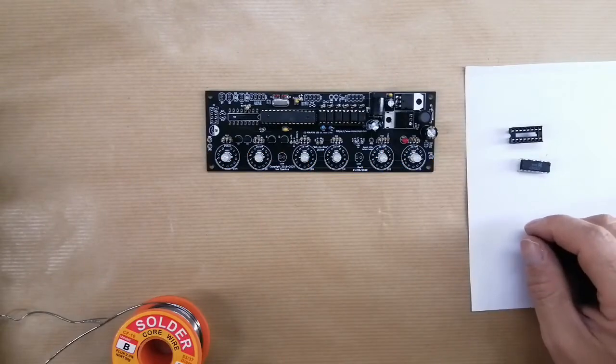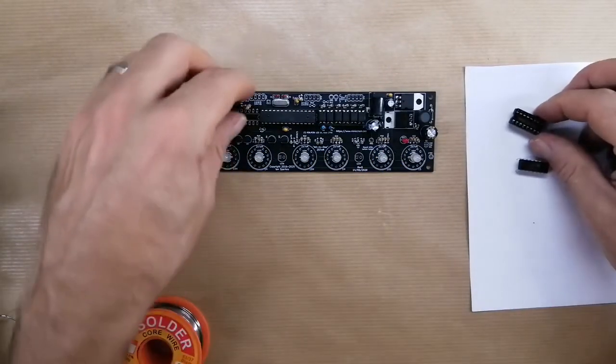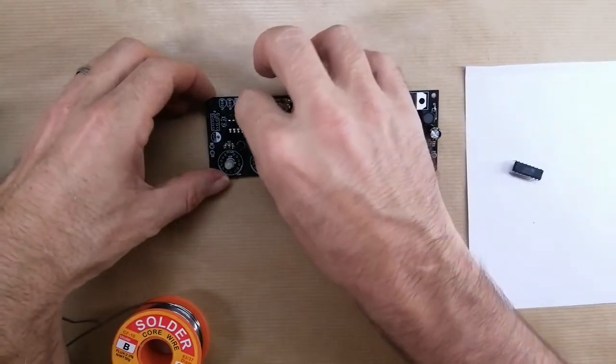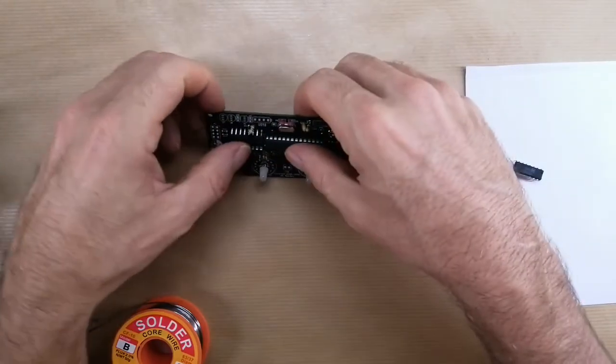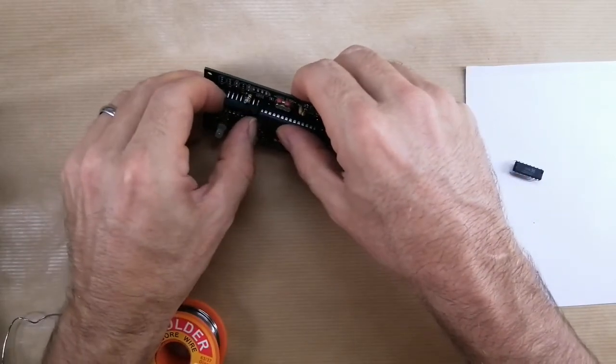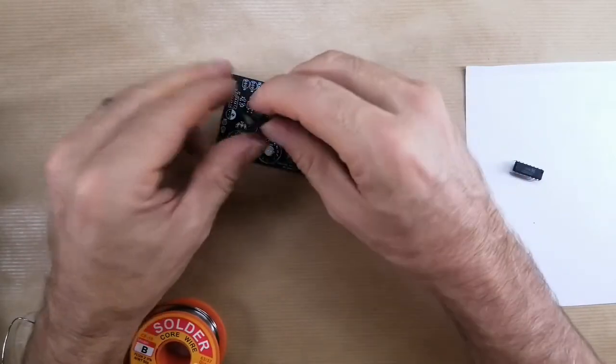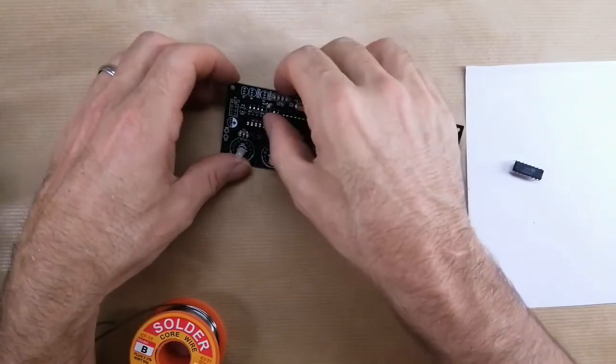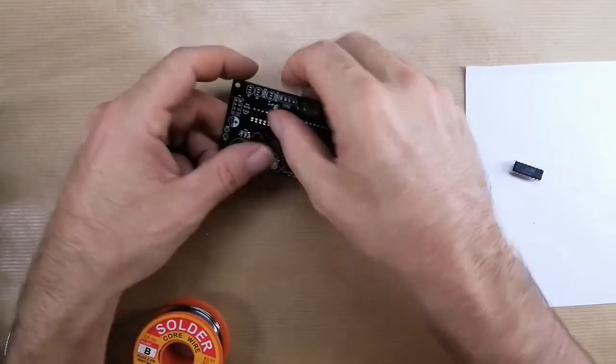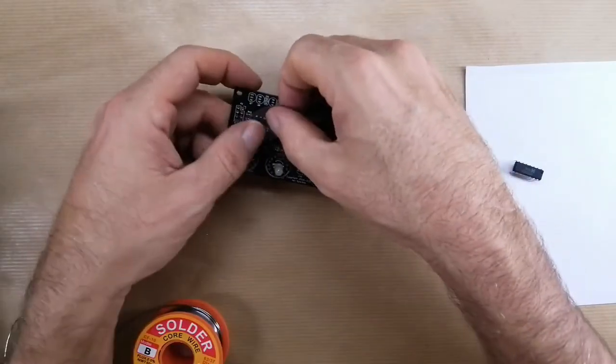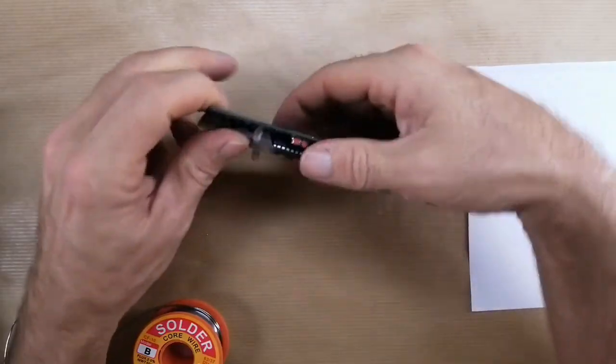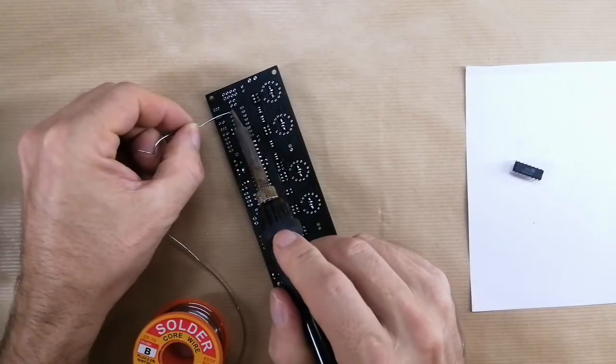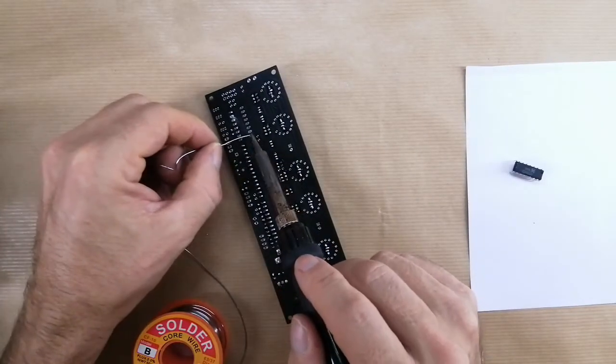So now for the cathode control circuit, and this isn't going to take very long. Basically, we just have to put the socket in here and then the chip in the socket, and that is it. So I need to straighten the pins on the socket a bit, and you already know what comes next. A bit of tape, solder two of the legs.